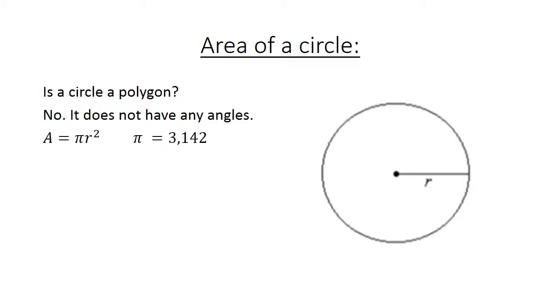The formula for area of a circle is A equals pi r squared. In this example we can use pi as 3.142. You can also use your calculator. Radius is the diameter divided by 2.